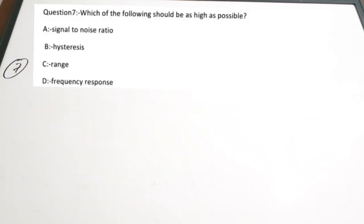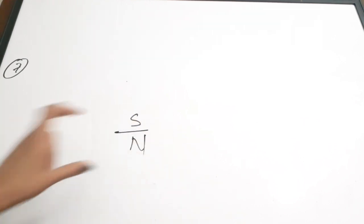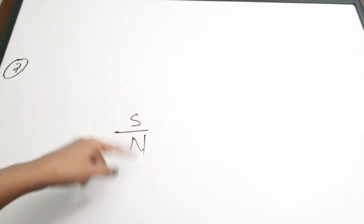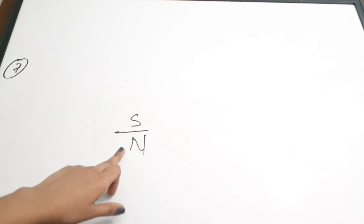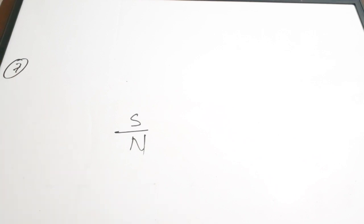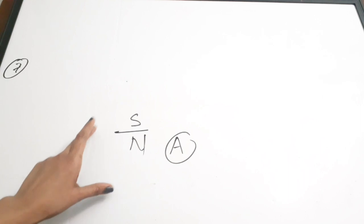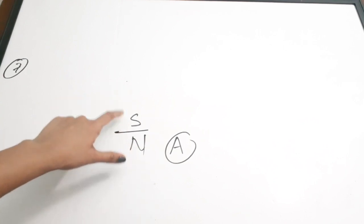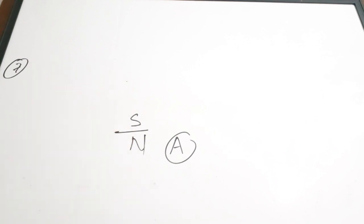Seventh question: which of the following should be as high as possible? A) signal-to-noise ratio, B) hysteresis, C) range, D) frequency response. Signal-to-noise ratio (SNR) is the ratio of signal power to noise power. A high SNR means signal power is high and noise power is low, indicating good quality signal. Correct answer is option A — signal-to-noise ratio.